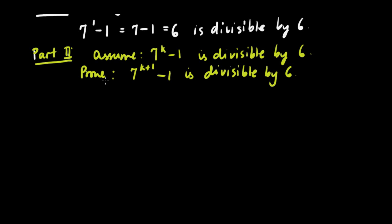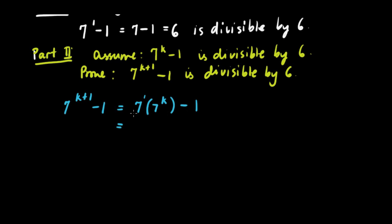Now, the proof — we want to show this. We have 7 raised to k plus 1 minus 1. This is equivalent to 7 times 7 raised to k minus 1. Remember, same base — kapag nagmultiply tayo ng same base, we just add the exponent. So magiging 7 raised to 1 times 7 raised to k, which becomes 7 raised to k plus 1. So we can factor out 7. Then, 7 can be expressed as 6 plus 1, times 7 raised to k minus 1.